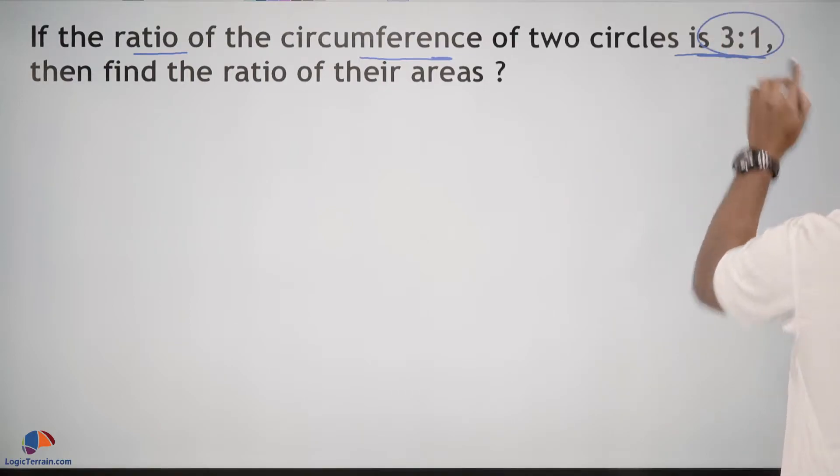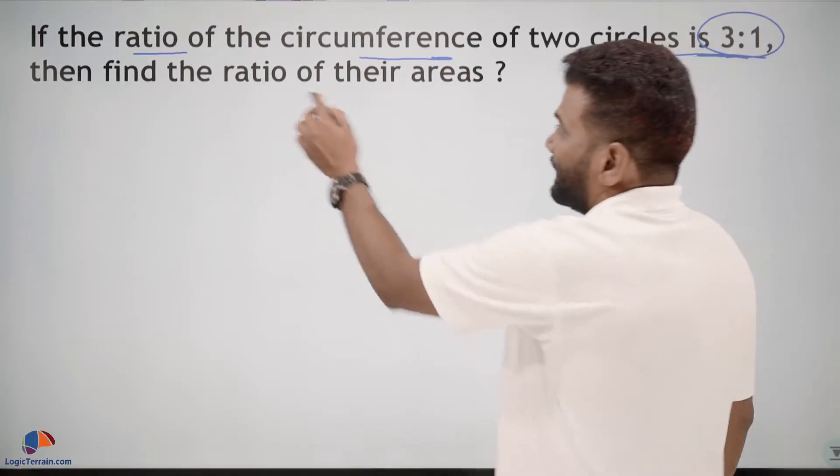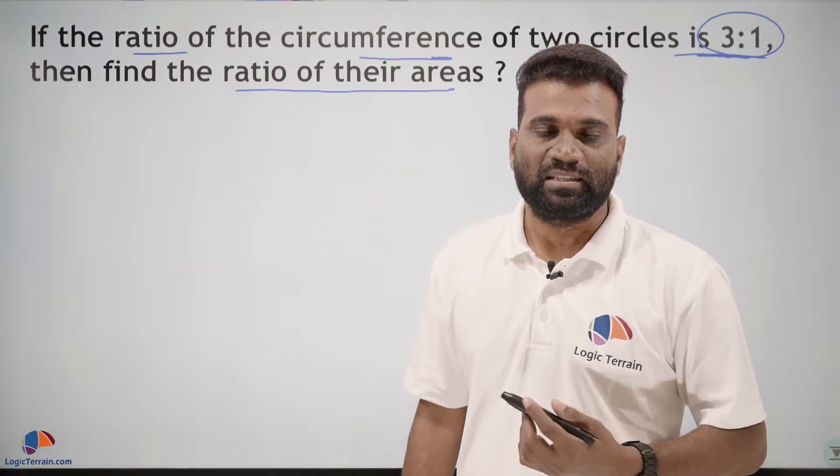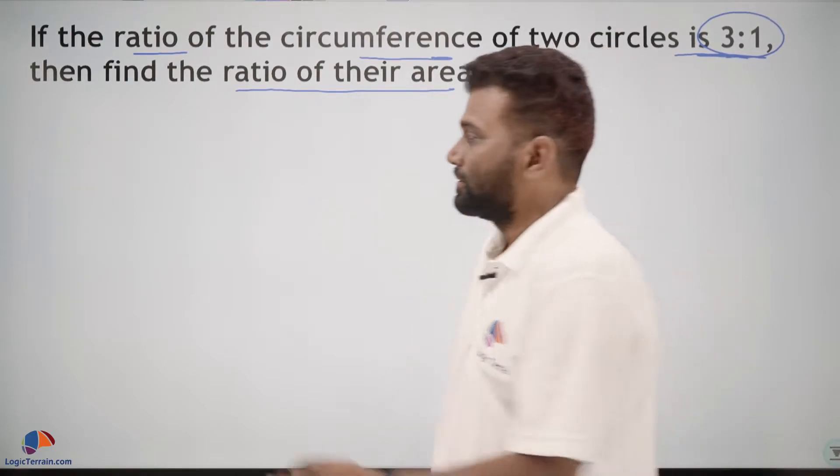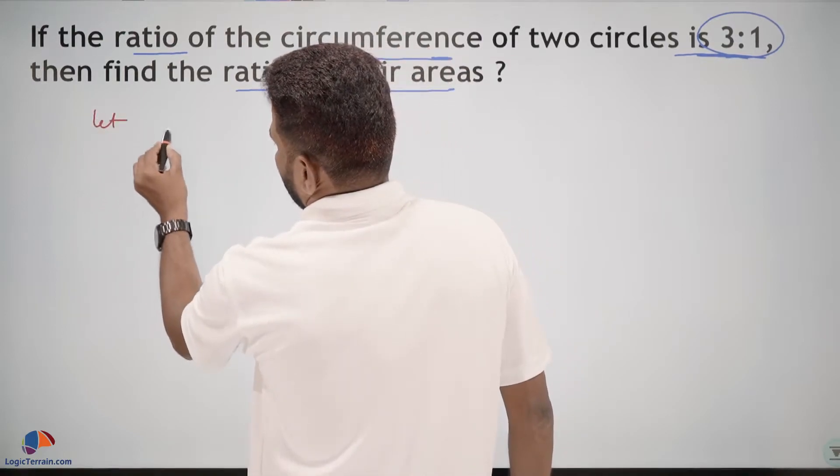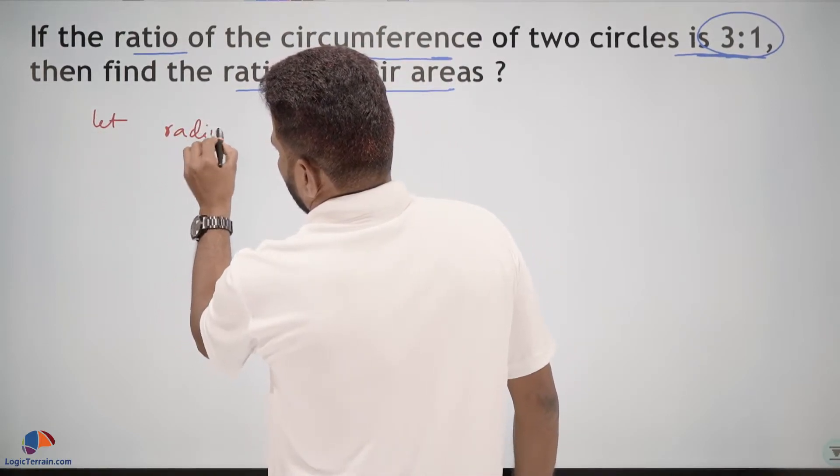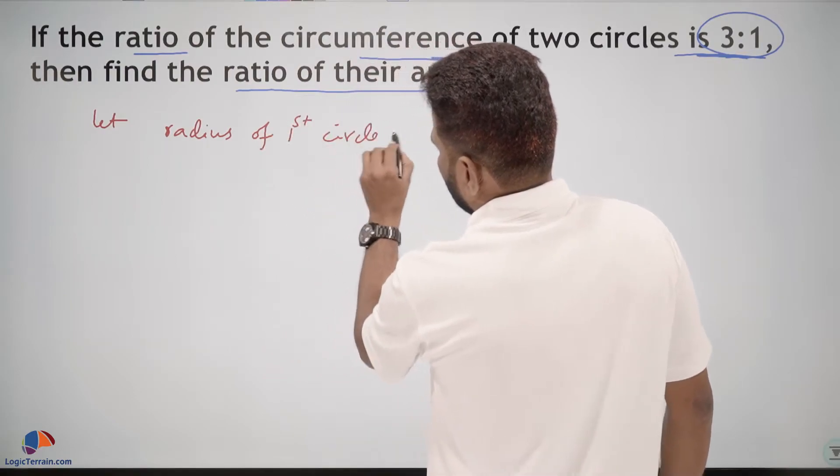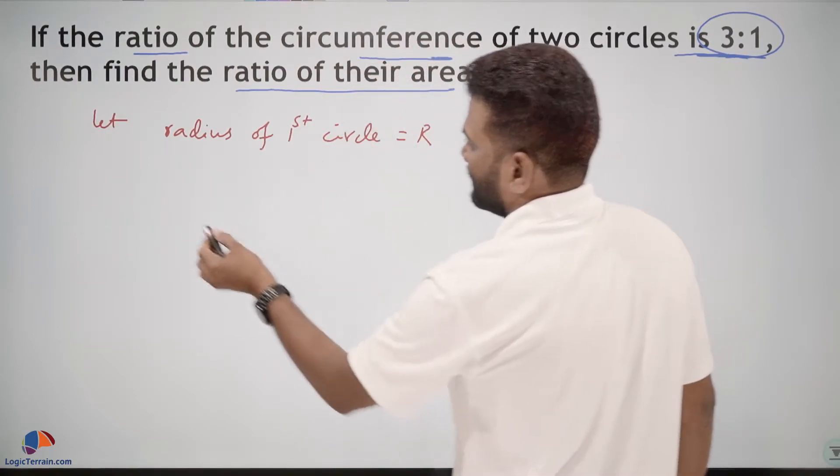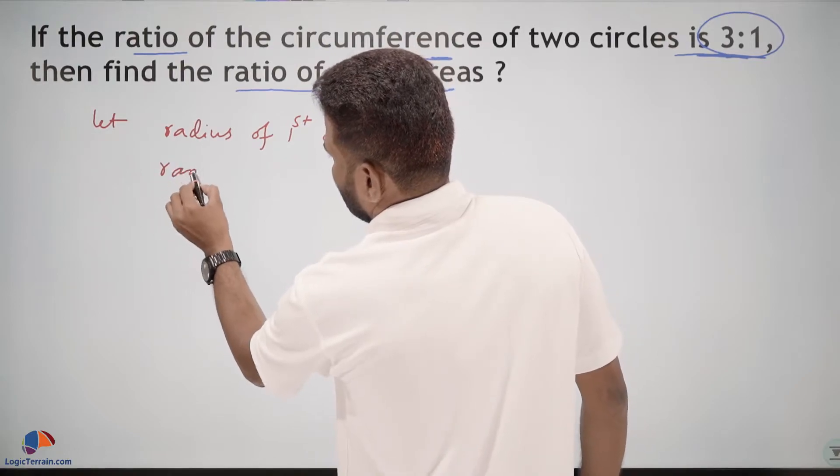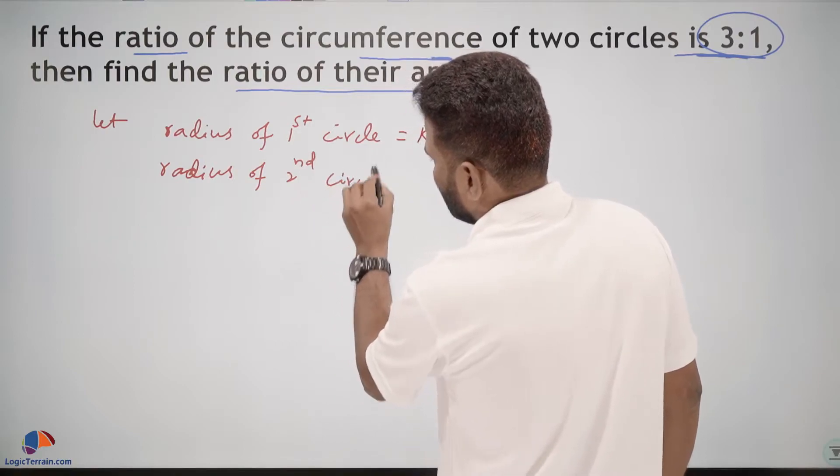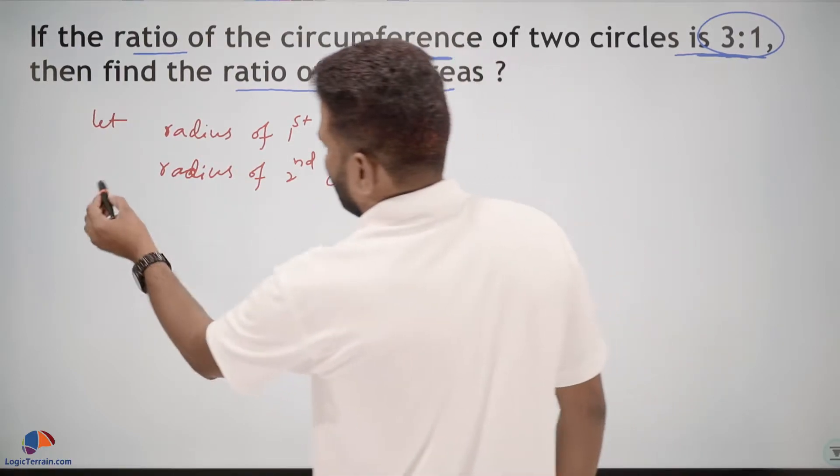And we need to find the ratio of their areas. There are two circles. Let the radius of the first circle equal capital R, and radius of the second circle equal small r.